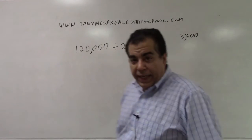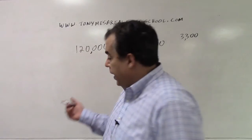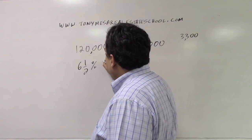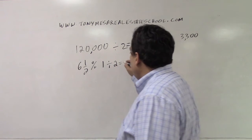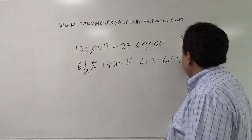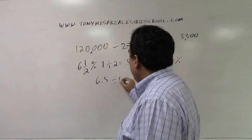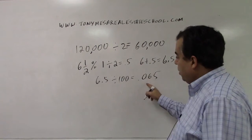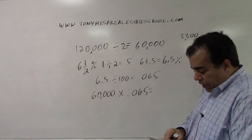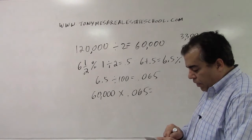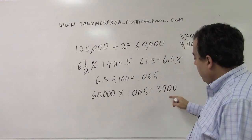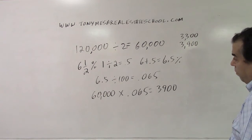I'll write down $3,300 — that's on the first half. On the other half, the other $60,000, the commission is 6.5%. To change that to a decimal: 1 divided by 2 gives 0.5, so 6.5%. Then 6.5 divided by 100 is 0.065. Sixty thousand times 0.065 gives you $3,900 — that's the commission on the second half.